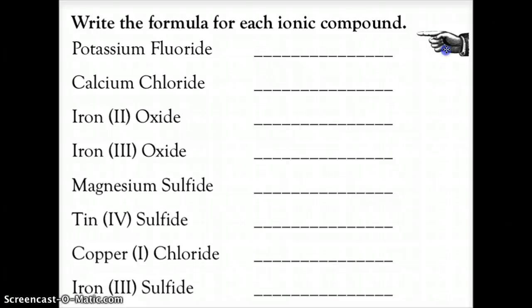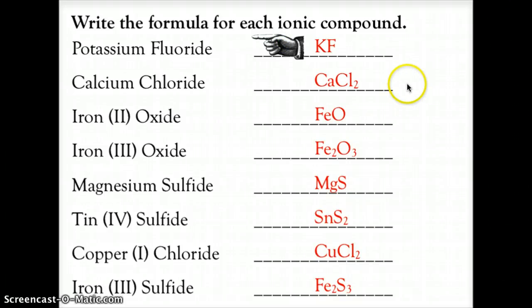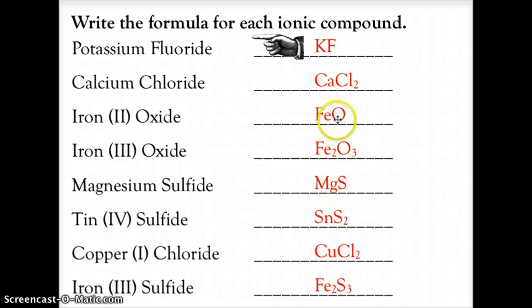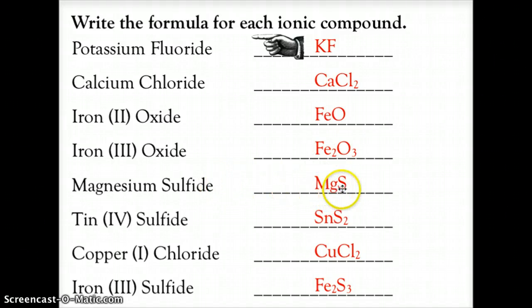Let's see how you did. Potassium fluoride: potassium is +1, fluoride is −1 — a one-to-one ratio — so KF. Calcium chloride: calcium is +2, chloride is −1, so we need two chlorides: CaCl2. Iron(II) oxide: iron is +2, oxygen is −2 — one-to-one ratio — FeO. Iron(III) oxide: iron is +3, oxygen is −2, giving Fe2O3 because two +3 irons balance three −2 oxygens.